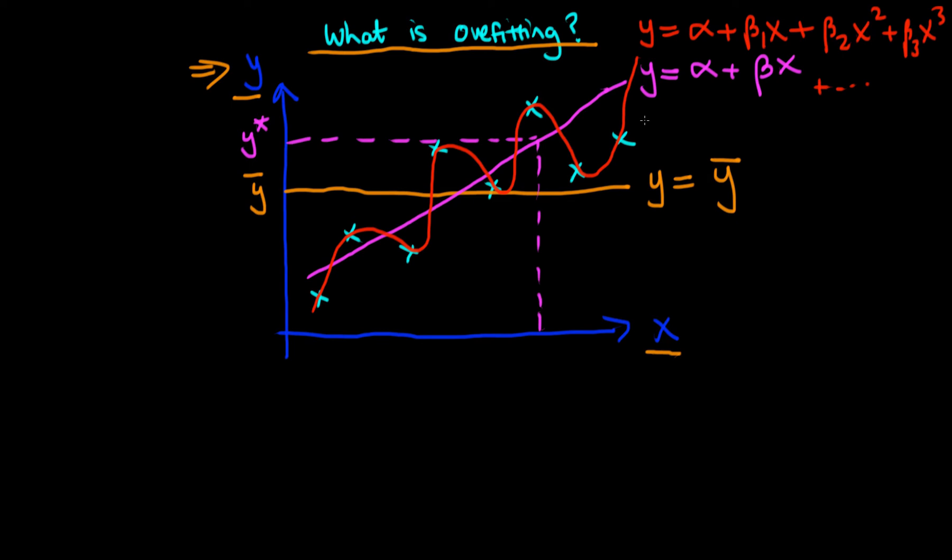So which of these three models should we prefer? You might be tempted to say that the red line, because it fits our data perfectly, is the best model. But would this actually be the case?